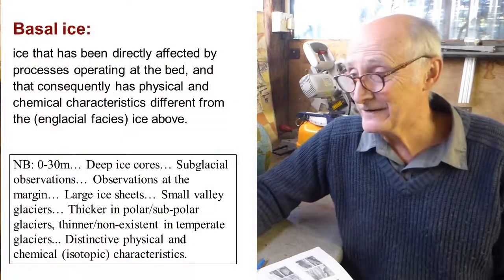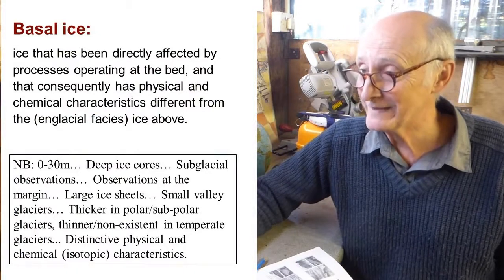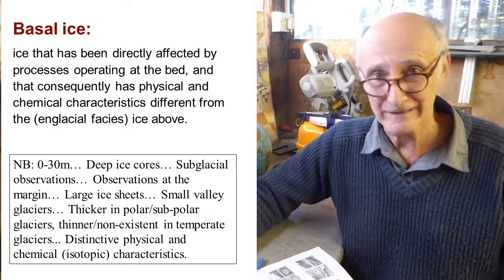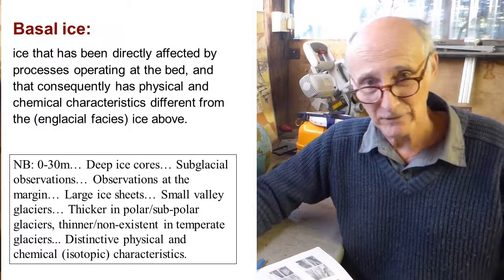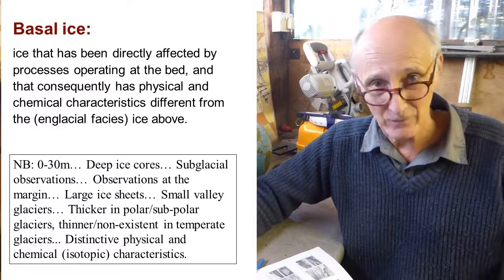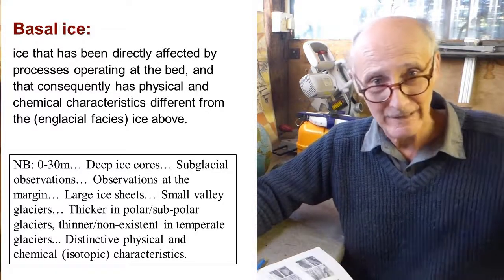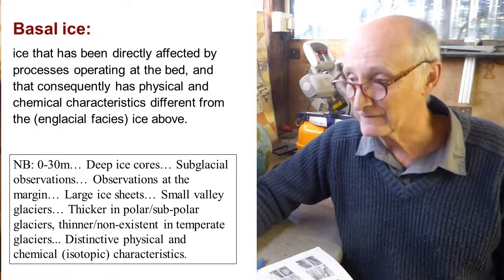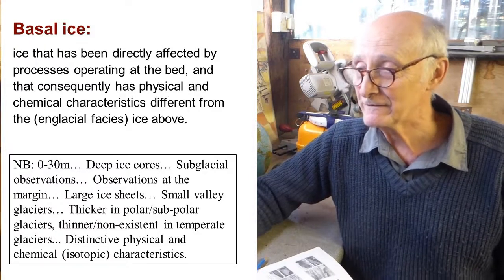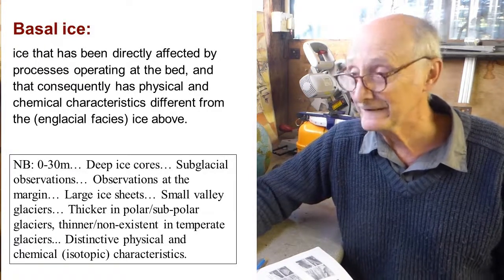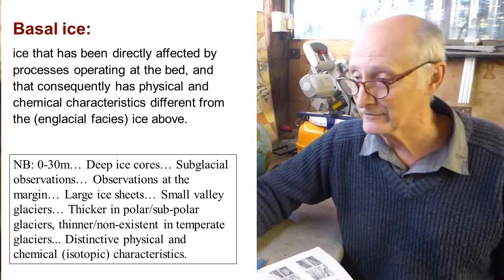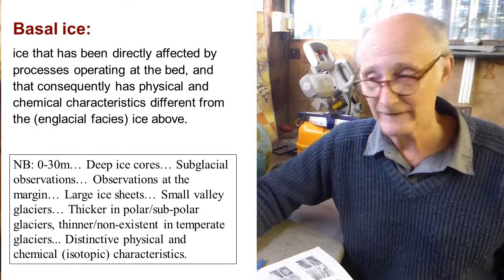So, what is basal ice? Basal ice is ice that's been directly affected by processes operating at the bed. In other words, it isn't simply formed by the accumulation, burial, recrystallization, and compression of snow to make ice — the bulk of englacial ice is made that way. Basal ice is different: it has physical and chemical characteristics that are different from the englacial ice above.